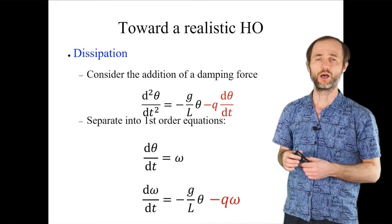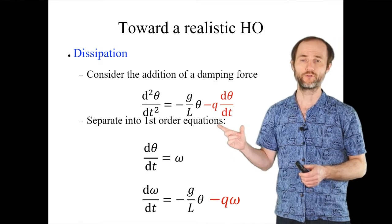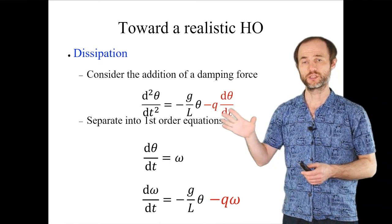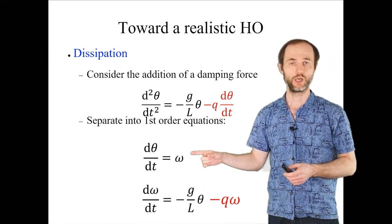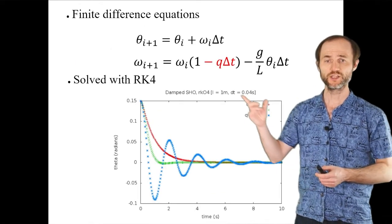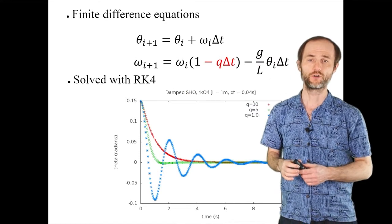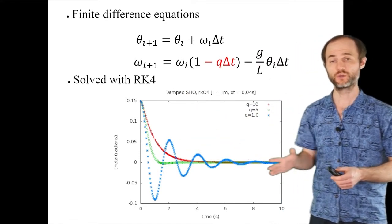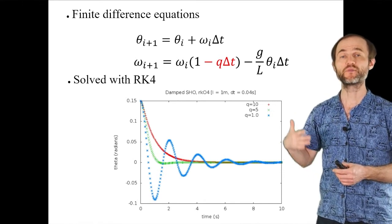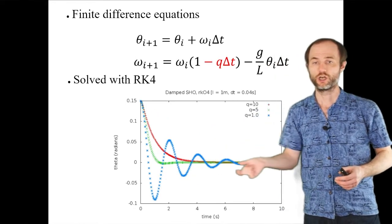What if we add friction? We add a force proportional to velocity — some dissipation. As before, we separate the second-order ODE into two first-order ODEs: the first defines angular frequency omega, and the second gets a modification from the drag force. The finite-difference equations also get this extra term (with the correct plus sign, no typo this time). Plotting the results, with friction present the amplitude of oscillations decreases over time, eventually going to zero as energy gets dissipated.